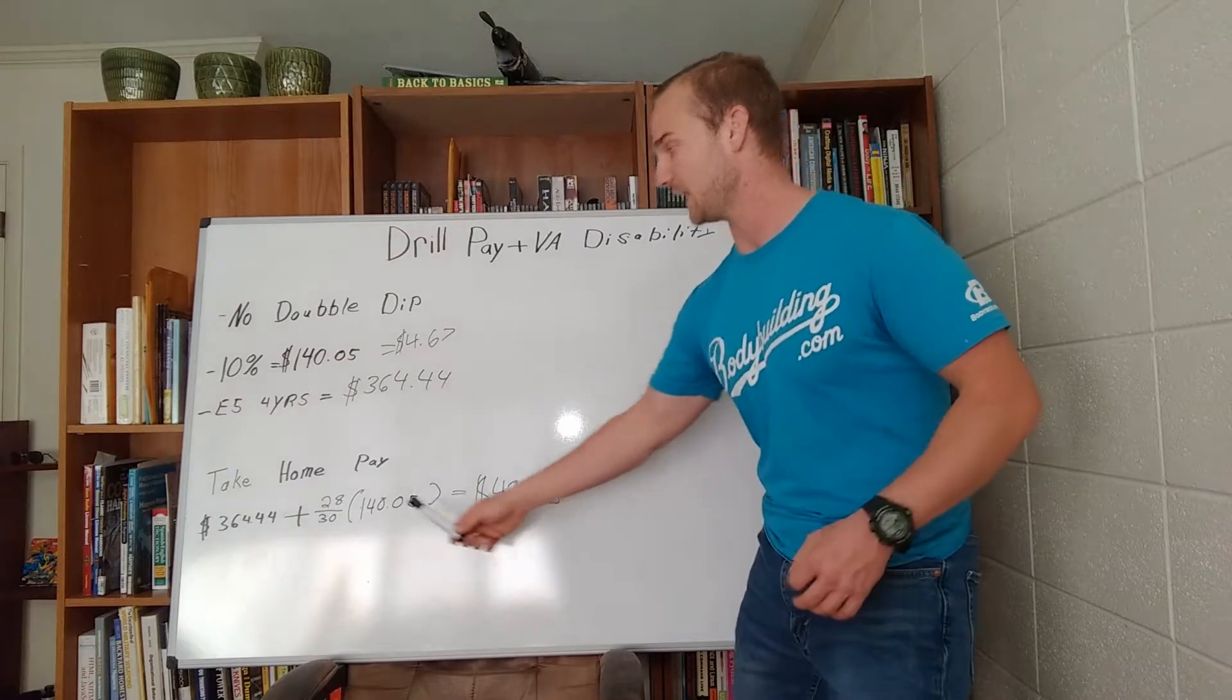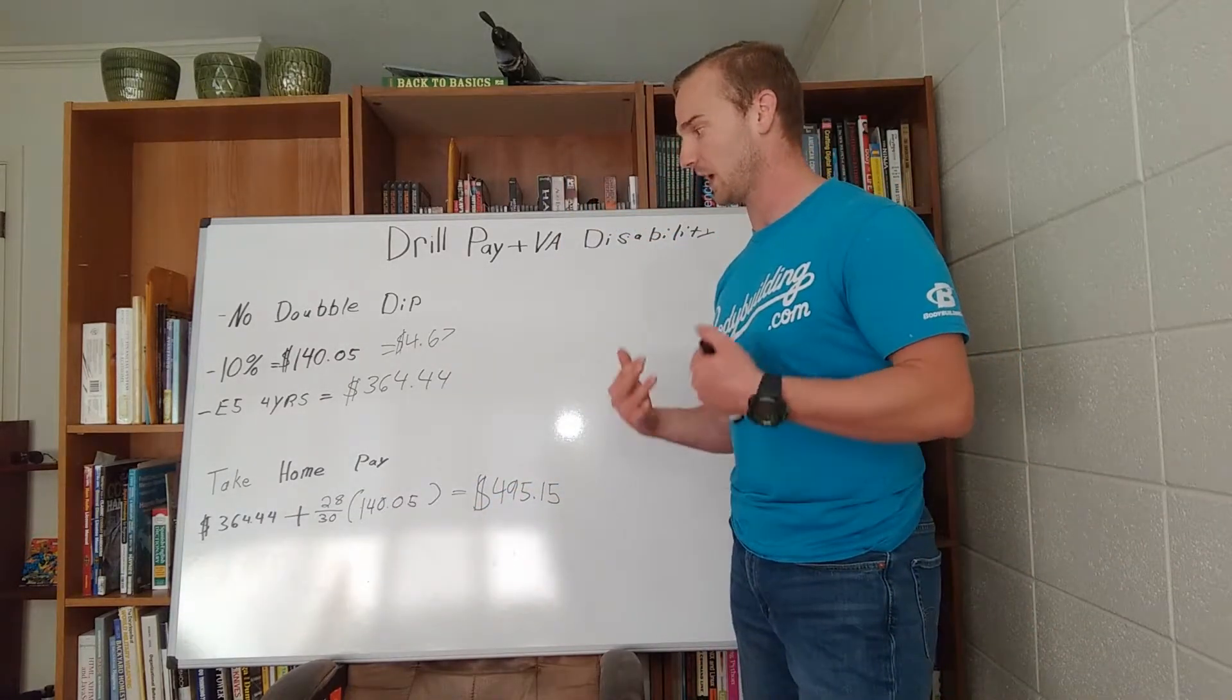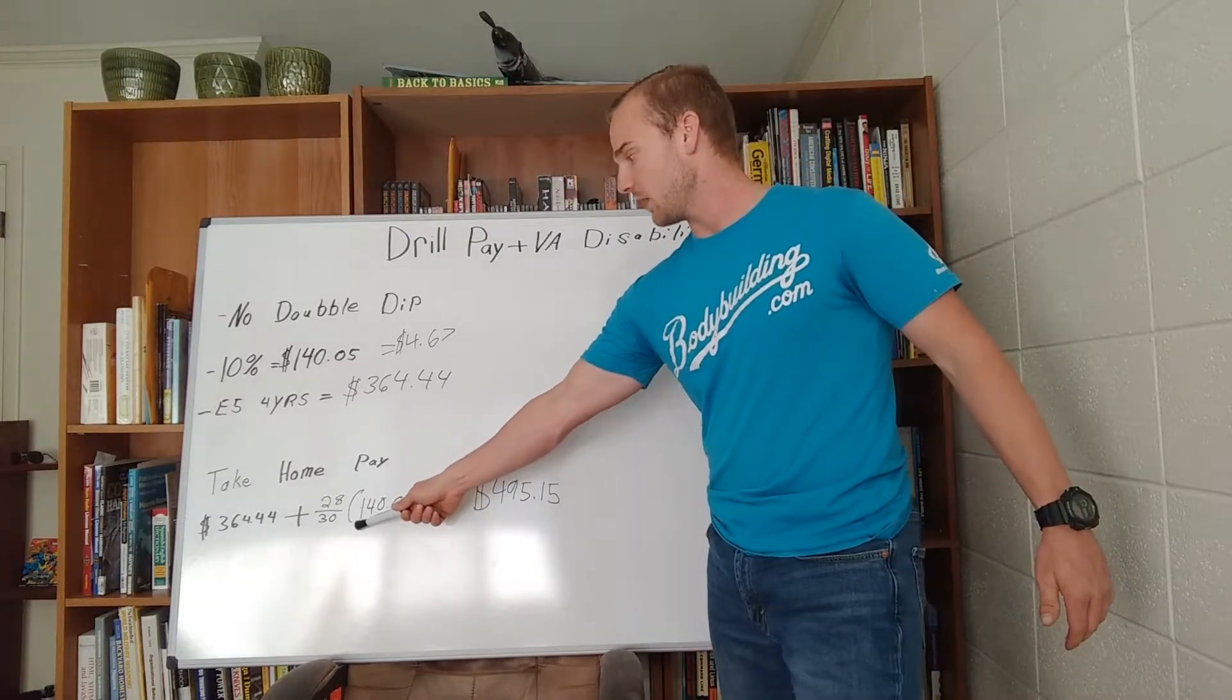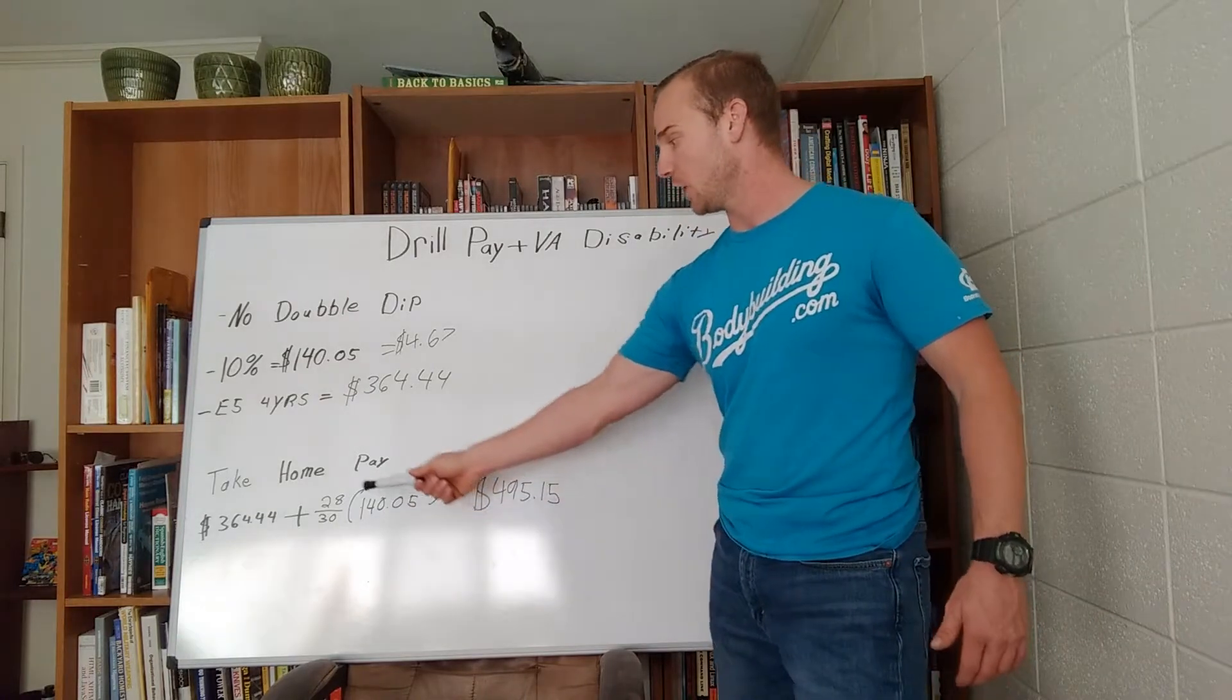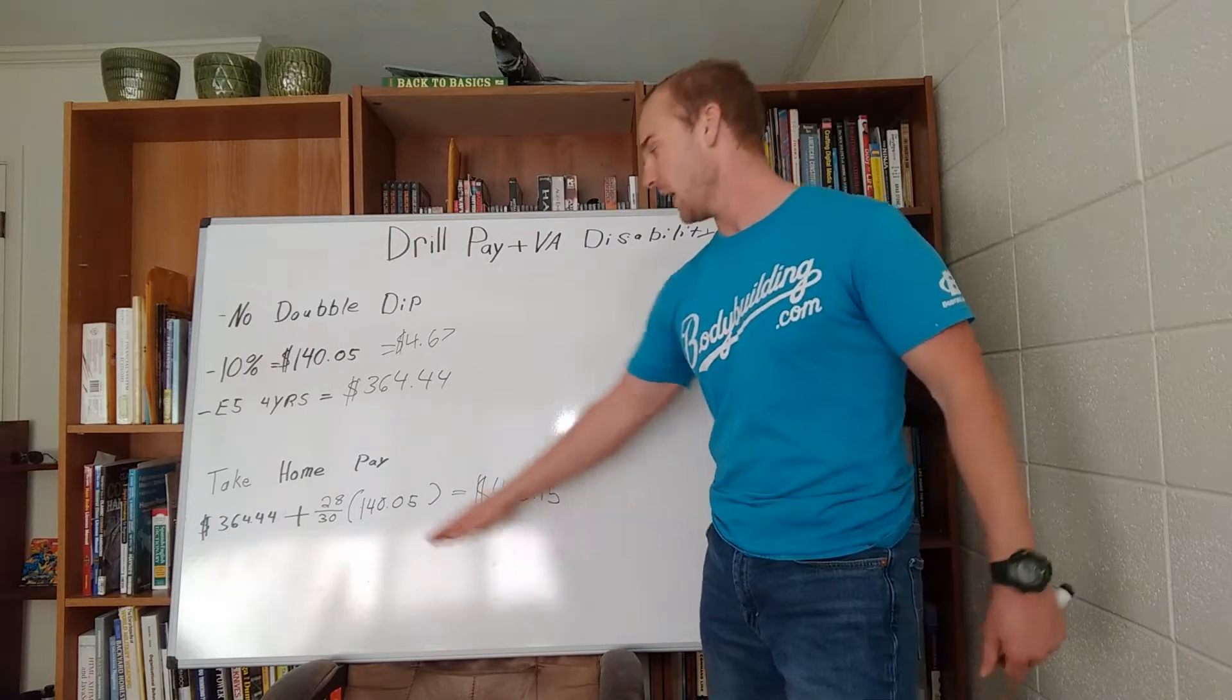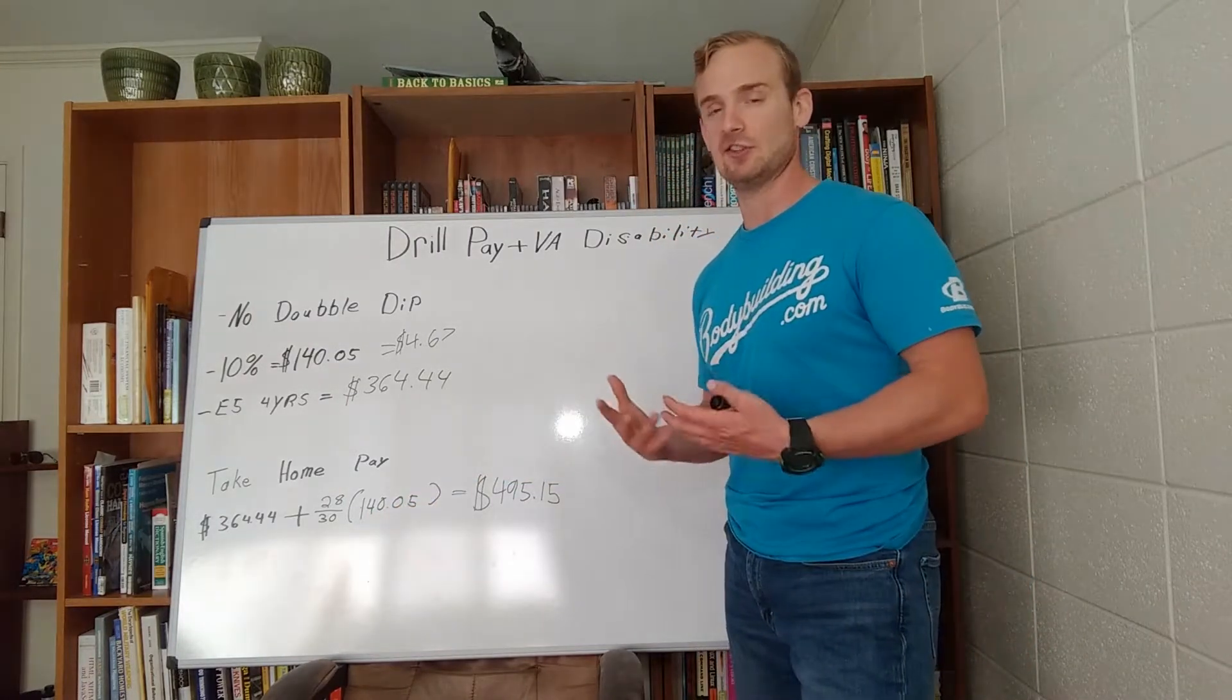So my final take home pay at the end of the month would be $364.44, that's the drill pay, plus that prorated amount of my VA disability pay. So in this case, 28 divided by 30, or if you want to look at it another way, I'm getting 93% of that VA disability pay.